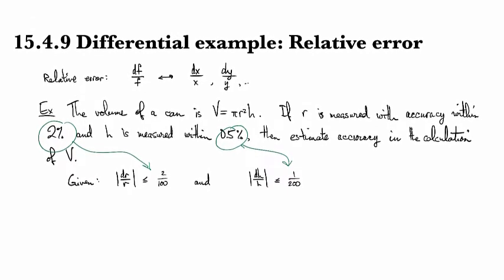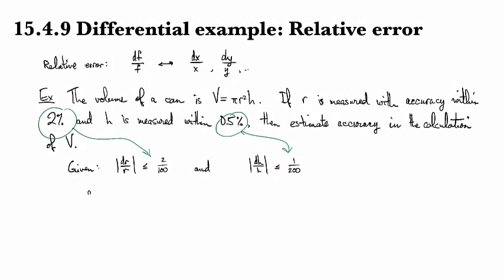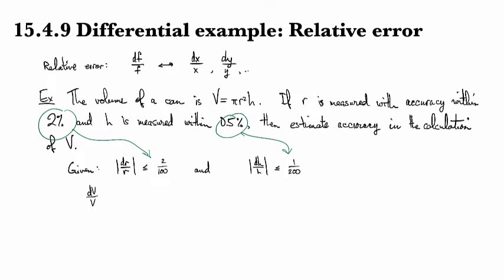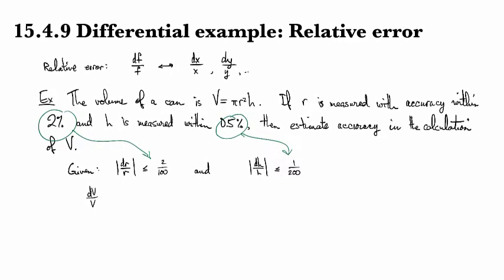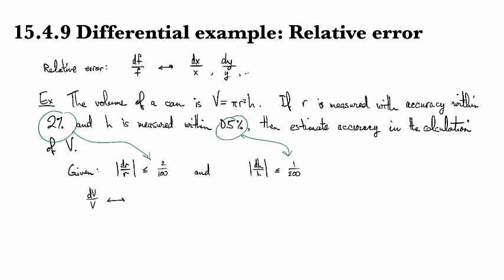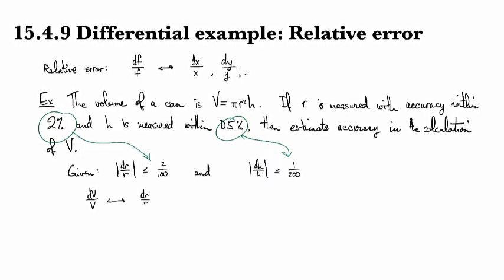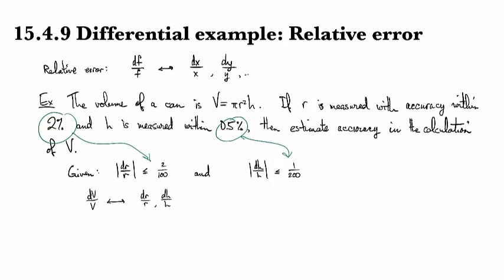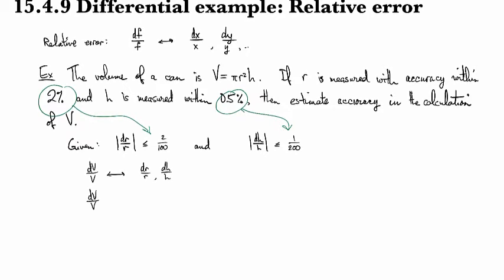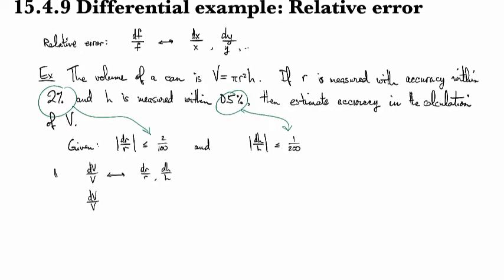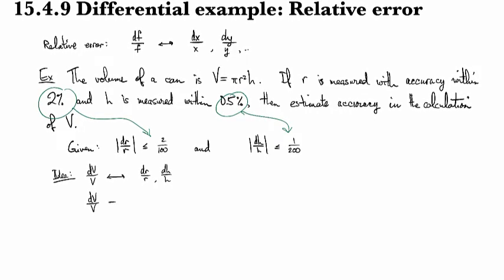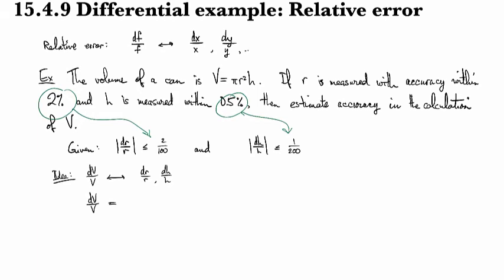Now if we look at dV over V, the idea is we want to express this in terms of dR over R and dH over H. So let's go ahead and compute dV over V. This is the idea or strategy.